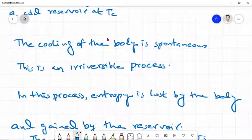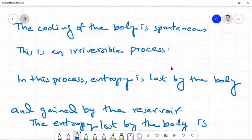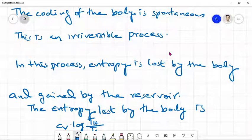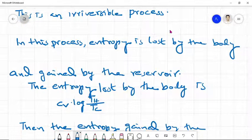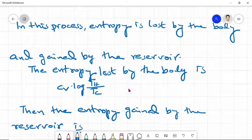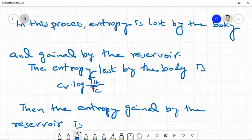To transfer heat from the sink to the source, we have to do work on the system. In this process, entropy is lost by the body and entropy is gained by the reservoir. The entropy lost by the body is given by CV log TH by TC.